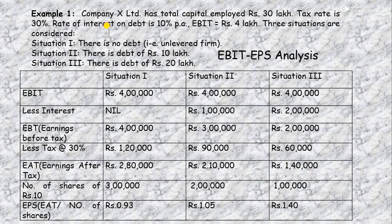Company X Limited has total capital of Rs. 30 lakh. Tax rate is 30%, rate of interest on debt is 10% per annum, and EBIT (earning before interest and tax) is Rs. 4 lakh. X Limited के पास 3 options हैं capital structure set करने के लिए: Situation 1 — there is no debt; Situation 2 — there is debt of Rs. 10 lakh (10 lakh bank loan, 20 lakh equity shares); Situation 3 — there is a debt of Rs. 20 lakh (20 lakh bank loan, 10 lakh equity shares).